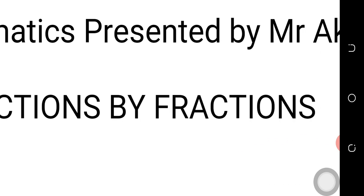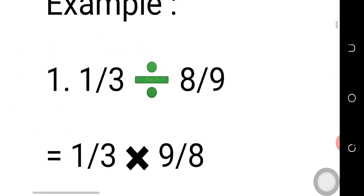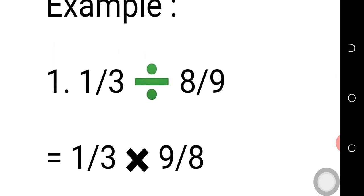Let's begin the questions one by one. The first question says one over three divided by eight over nine. Once again, one over three divided by eight over nine. How are we going to solve this question? As you all know,